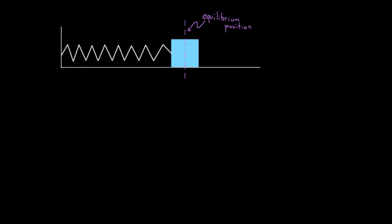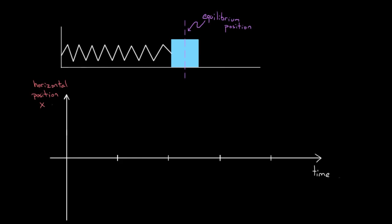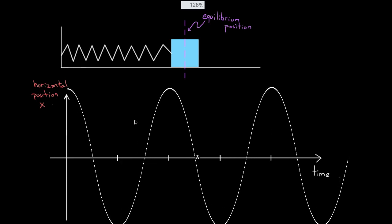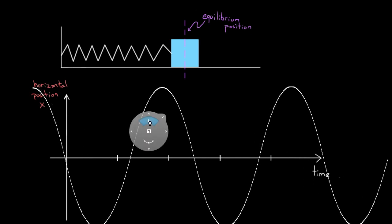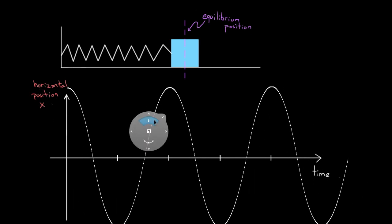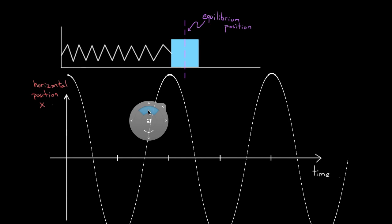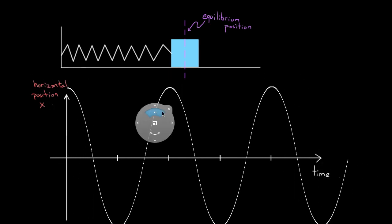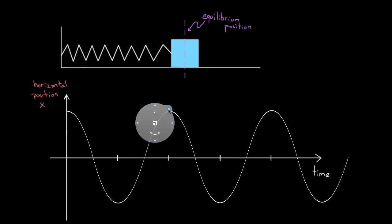If you were to look at this on a graph, if we increase the amplitude, the graph would just stretch vertically — we'd have a bigger amplitude — but there would not necessarily be any stretch horizontally. If you leave everything else the same and only change the amplitude, the period would remain the same. Changes in amplitude do not affect the period.